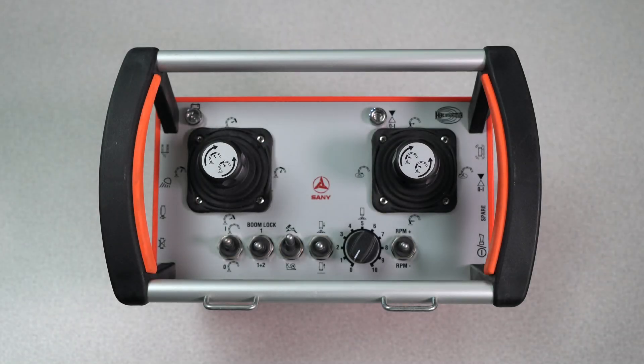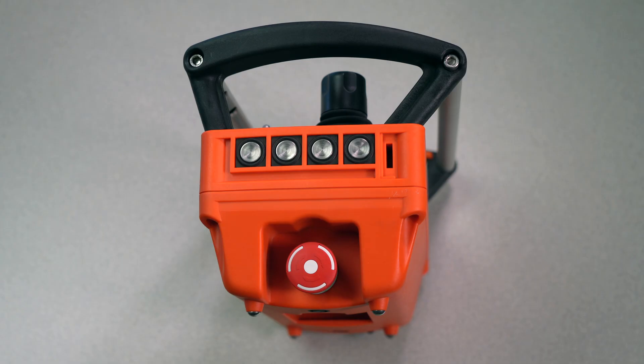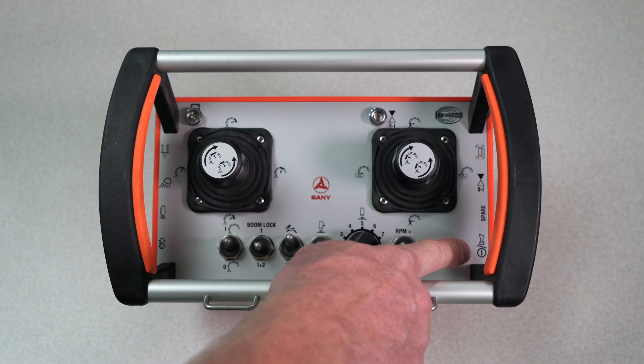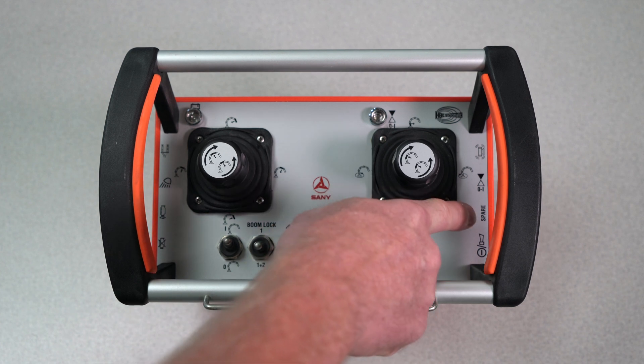Here we are with the SONI five-arm remote. Starting on the right-hand side, we have our power, as well as our e-stop clear and our horn button. Here we have just a spare button.